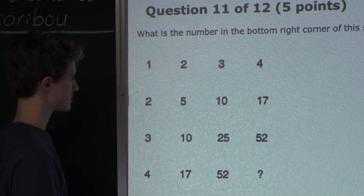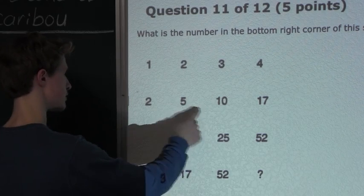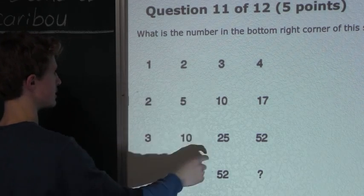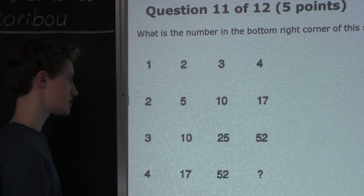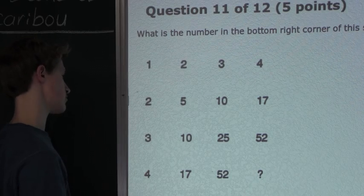So, let's use this rule for 10. And we will add up the left number, which is 5, the top number, which is 3, and the top left number, which is 2. So, 5 plus 3 is 8, plus 2 is 10. So, this works.